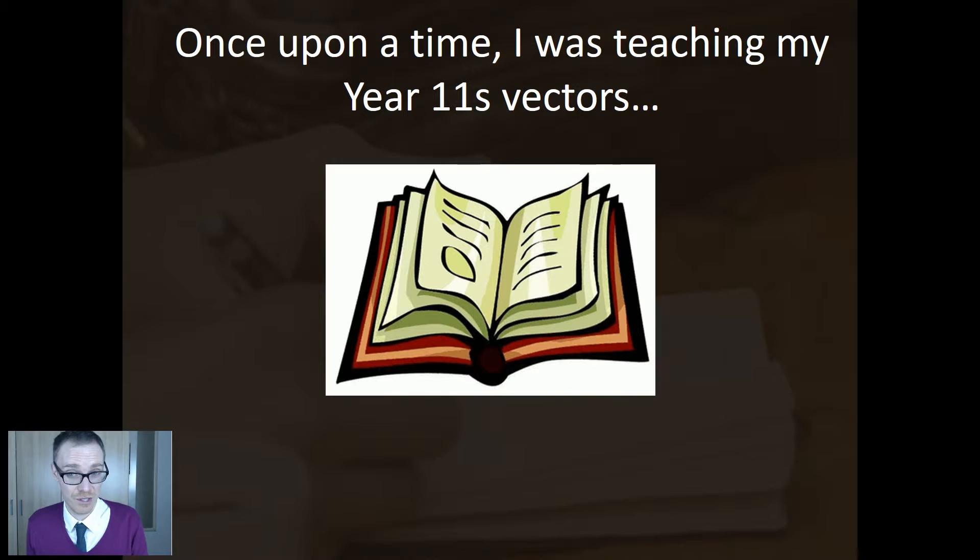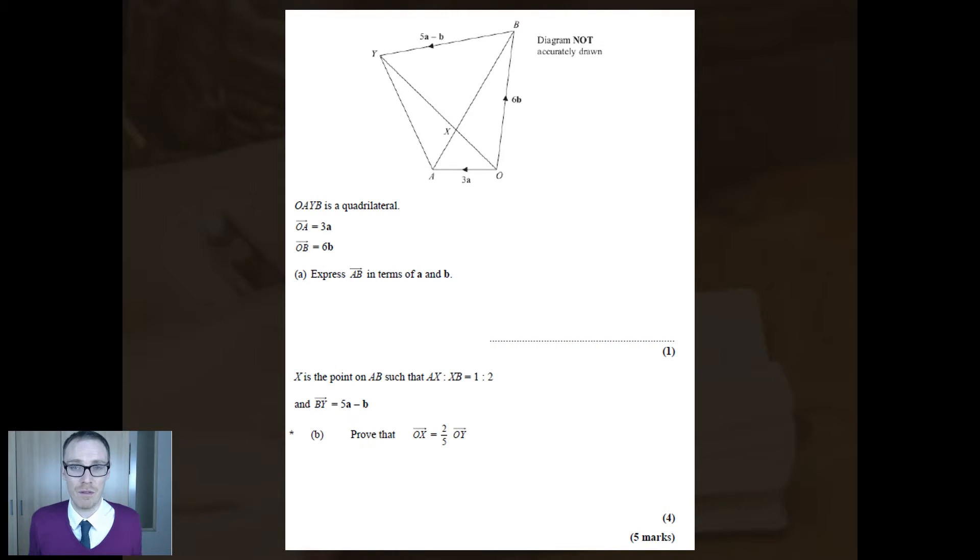So it got to the end of the series of lessons on vectors. And I thought a good way to round it off would be to give them a classic vectors exam question. So I picked out this one. Back of an Edexcel, non-calculator paper. Part A, express AB in terms of A and B. So I gave them this question, and I said, right, you've got five minutes. Let's see how you get on. So they're all working away. Part A, flew through it. Fine. During these five minutes that the kids are working, I could see them whizzing through part A. Everyone's happy.